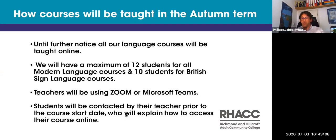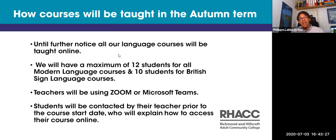We will cap our courses to 12 students for all modern language courses. This means that even if you return face-to-face in October, we will not allow more students to join, particularly at a beginner's level. If you're planning to do British Sign Language, we'll have a maximum of 10 students — in BSL it's all visual, so it's important for the tutor to have all students visible on screen so she can see them all and help them.